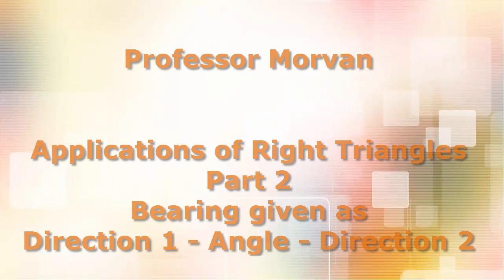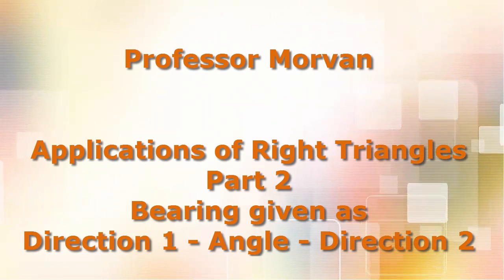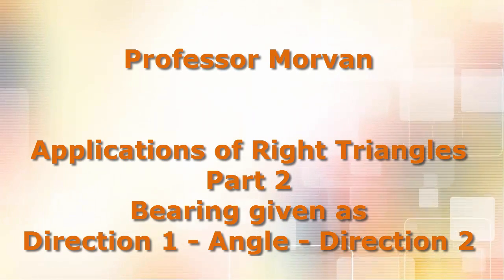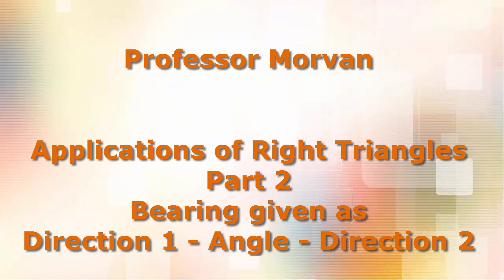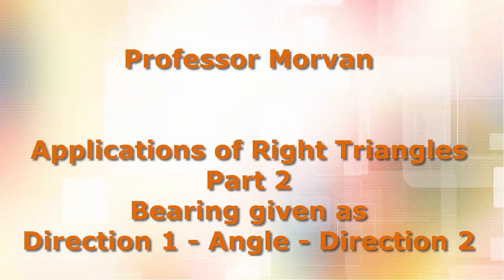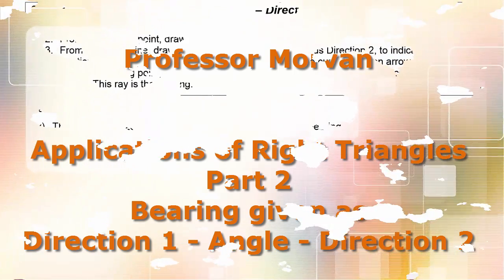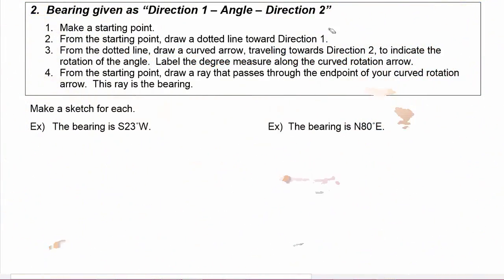In part two of our lesson on applications of right triangles, you're going to learn how to do bearing given as direction one, angle, direction two. There are four steps to doing bearing in this manner, so let's get right into the examples. We're going to make a sketch for each situation.